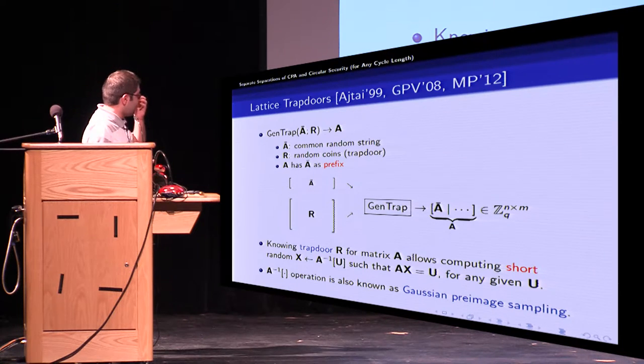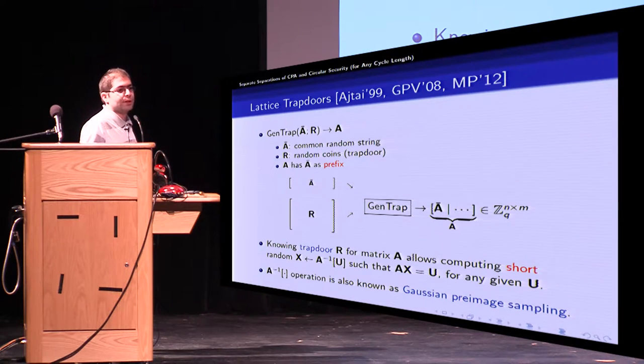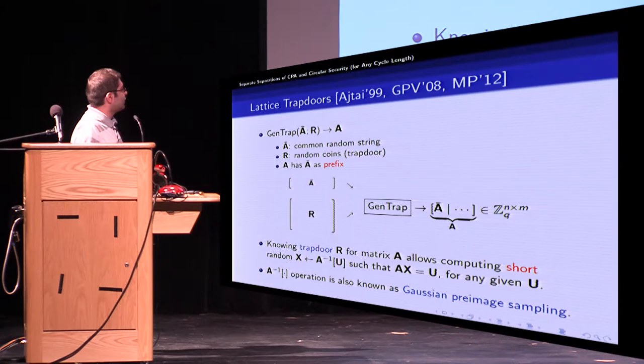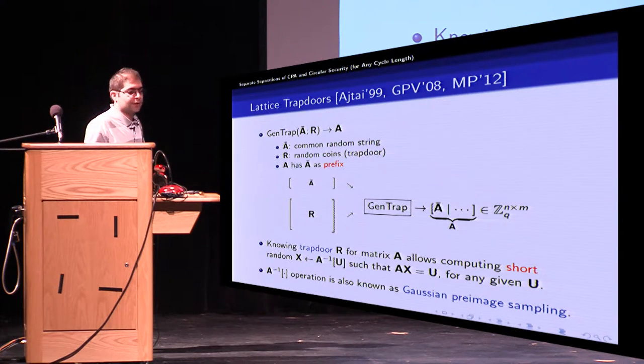Once you know the trapdoor for matrix A it allows you to compute short random X such that AX equals any arbitrary right hand side. Note that this inverse operation is not a normal inverse operation and it's a rather randomized procedure. And finally this A inverse operation is also known as Gaussian preimage sampling which has been used in many cryptographic contexts.